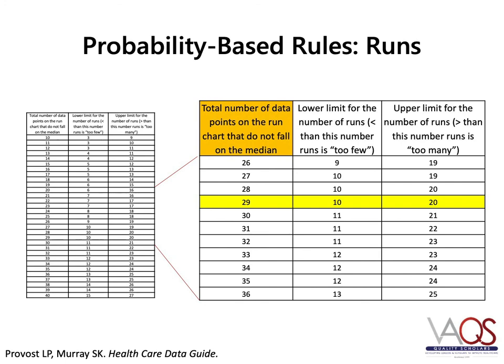Now that you know the number of usable data points and the number of runs, you need to use a reference table to determine the number of runs expected based on random variation. The reference table can be found in the readings for this mini-module. We had 29 usable data points, which means we would expect between 10 and 20 runs with random variation. We have 10, which means that by the number of runs rule, this run chart has common cause variation.